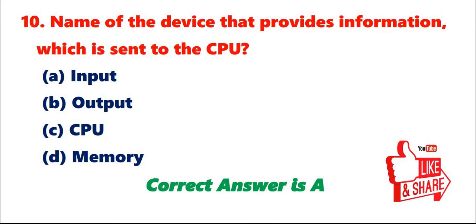Question 10: Name of the device that provides information which is sent to the CPU. A. Input. B. Output. C. CPU. D. Memory. Correct answer is A.